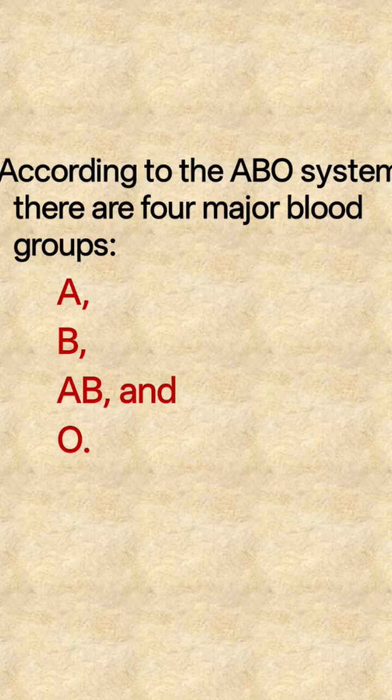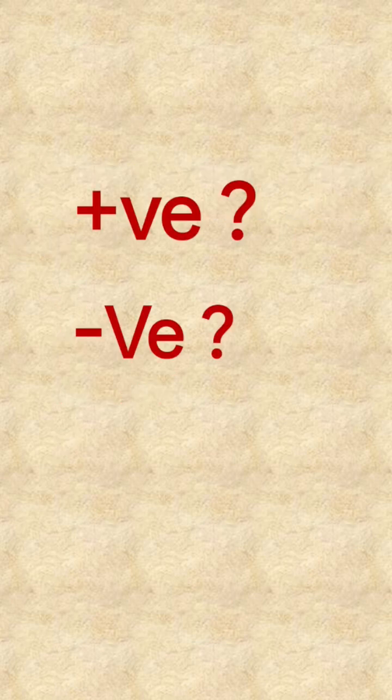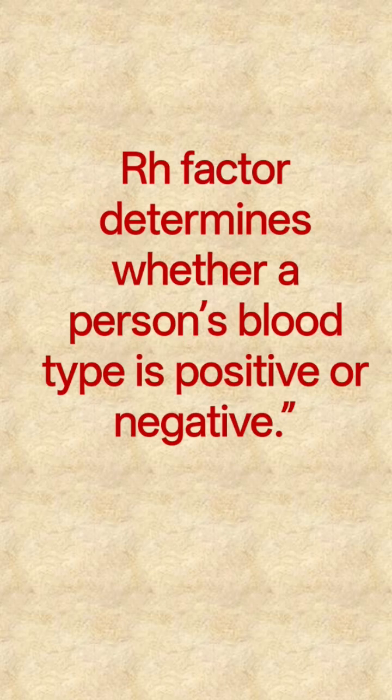B, AB, and O. Then what about positive and negative? The RH factor determines whether a person's blood type is positive or negative.